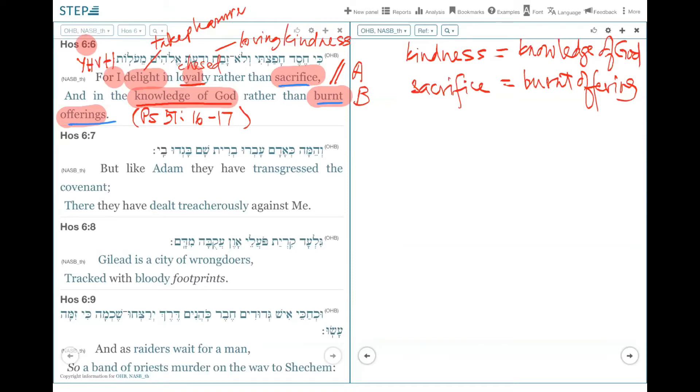He says, That's for you do not desire sacrifice, or else I would give it. You do not delight in burnt offering. That's verse 16. And in verse 17, it says this. The sacrifices of God are a broken spirit, a broken and contrite heart. These, O God, you will not despise. So it is important to read this in the same light.